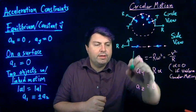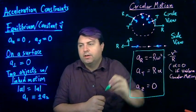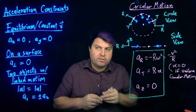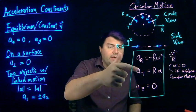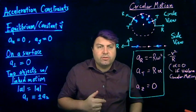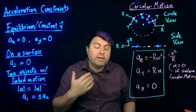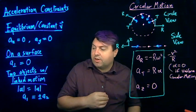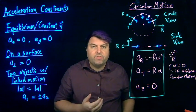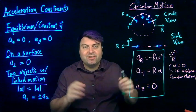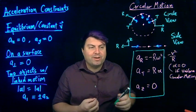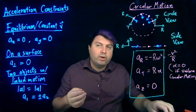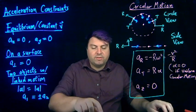So with all of these, these are our acceleration constraints. They're going to provide answers to a lot of different equations and reduce the number of unknowns so that we can solve these problems. If we don't have these acceleration constraints, we're going to be in a lot of trouble. Make sure you have these acceleration constraints when you're writing and solving your problems.